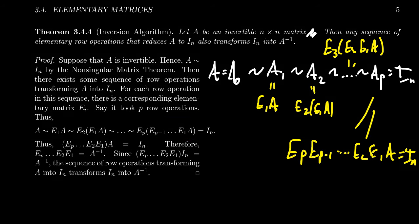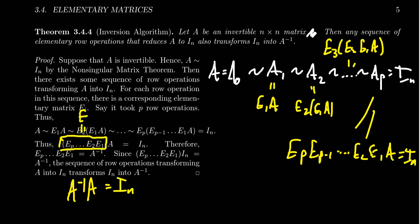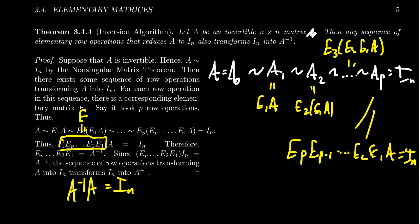So each row operation we perform can be rewritten using matrix multiplication, where Ei is an elementary matrix. If we put all the elementary matrices together, we have a product. Let's call that matrix E. Then E times A equals the identity, which means this guy right here must have actually been the inverse of A. So the product of all these elementary matrices is the inverse of A.